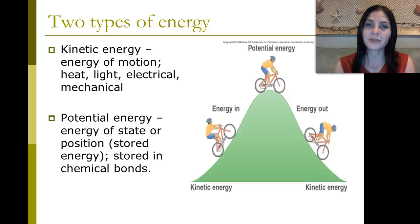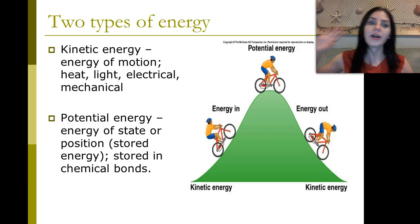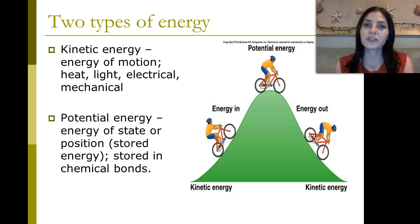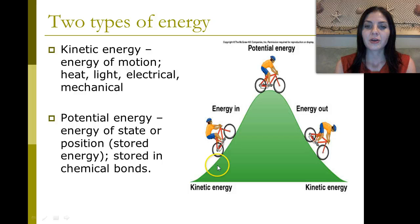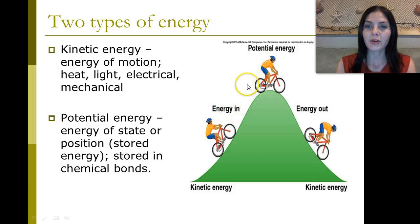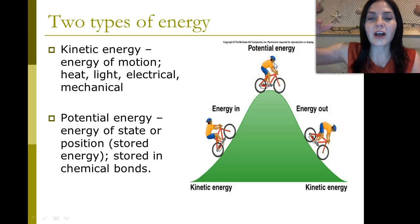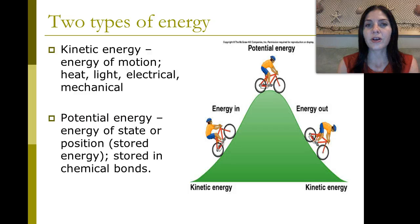We have two types of energy. We have kinetic energy, which is the energy of motion. And then we have potential energy, which is stored energy. Looking at this diagram, when a person is biking up the hill, that's kinetic energy. At the very top point, this is potential energy. And as he rolls down, that's the energy of motion again — kinetic energy.